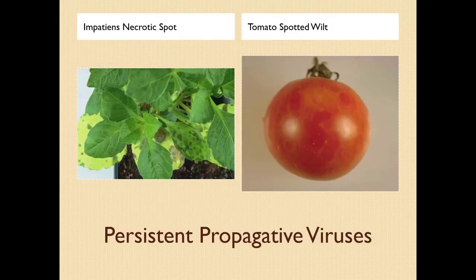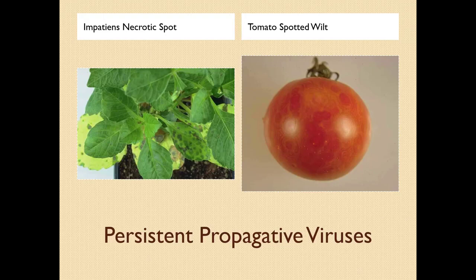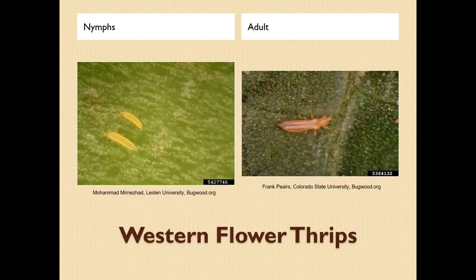Here are some persistent propagative viruses: impatiens necrotic spot, which is very common in many types of plants, and tomato spotted wilt. There's a unique relationship between thrips, such as western flower thrips, and tomato spotted wilt virus. Only the larval stages of thrips can pick up the spotted wilt virus, and they spread the virus as adults. Immature thrips get the virus when feeding on diseased plants and spread it as adults when feeding on healthy plants. Here are western flower thrips — nymphs on the left, adult on the right.